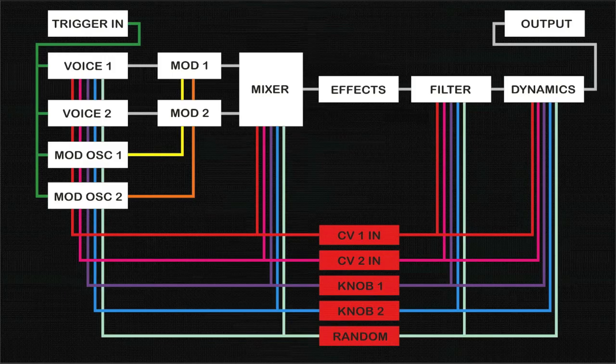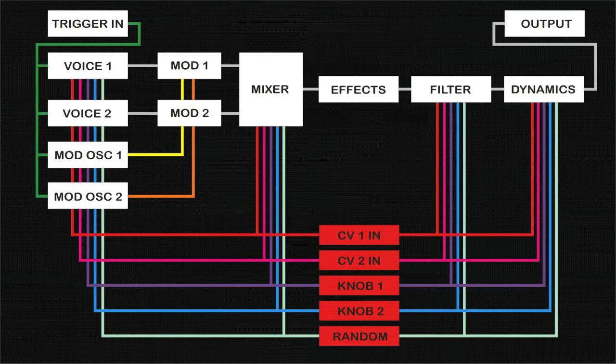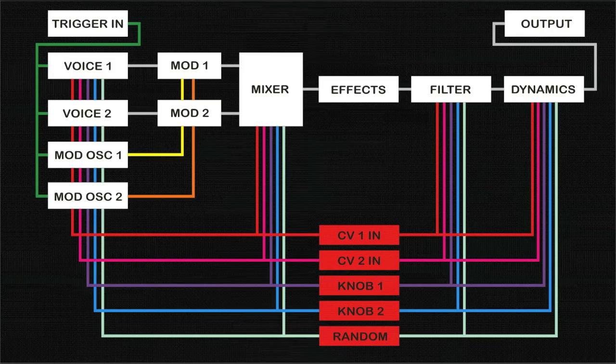There are quite a few other combinations of modulation sources, and these primarily include the ability to use either of the assignable knobs to further attenuate or add an offset to the external control voltage or the internal random values being generated.